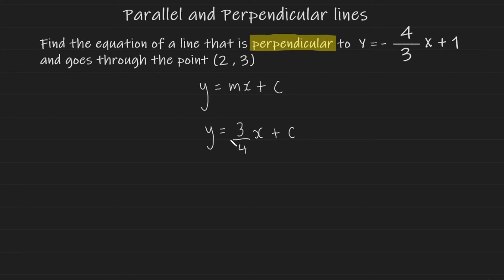And you don't really need to write a positive symbol here to show that it's positive. Writing it just as 3 over 4 is fine. Now we take the x and y values from our coordinate that they've given us, and input it into this equation here. So that's going to give us 3 is equal to 3 over 4 multiplied by 2 plus c.